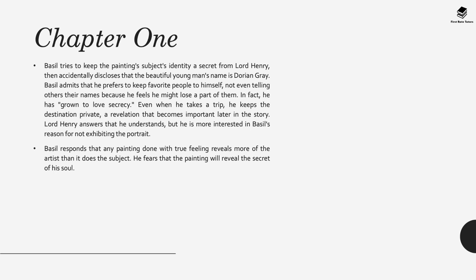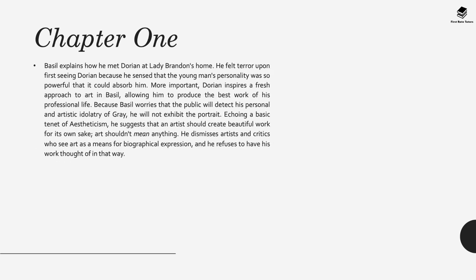Lord Henry seems more interested in Basil's reason for not exhibiting the portrait. Basil responds that any painting done with true feeling for his muse reveals more of the artist than the subject, and he fears this painting will reveal the secret of his own soul. Basil explains he met Dorian at Lady Brandon's home and felt terror upon first seeing him, sensing that Dorian's personality was so powerful it could absorb Basil himself. More importantly, Dorian inspires a fresh approach in Basil's art, allowing him to produce the best work of his professional life. Because Basil worries the public will detect his personal and artistic idolatry of Gray, he refuses to exhibit the portrait—echoing the basic tenet of aestheticism that art should create beauty for its own sake and need not mean anything.